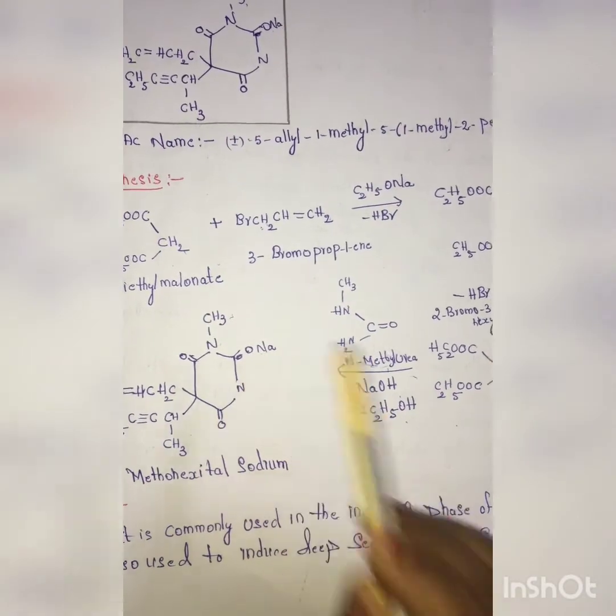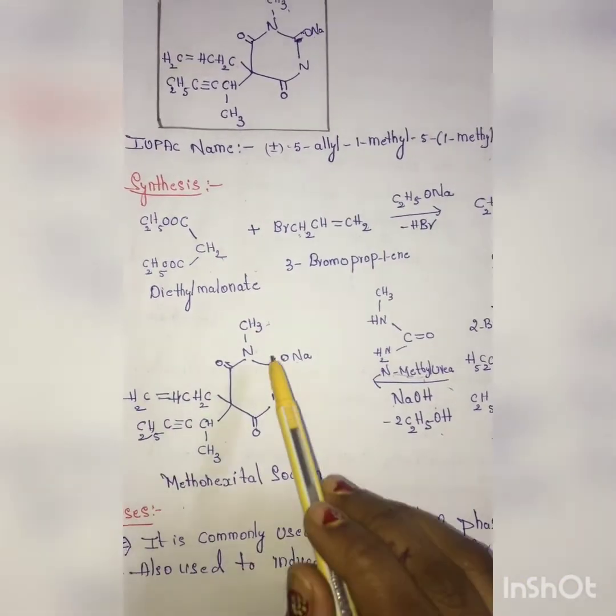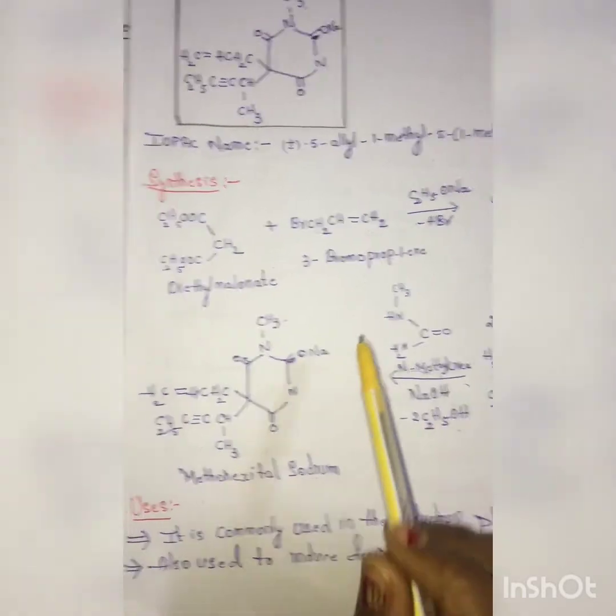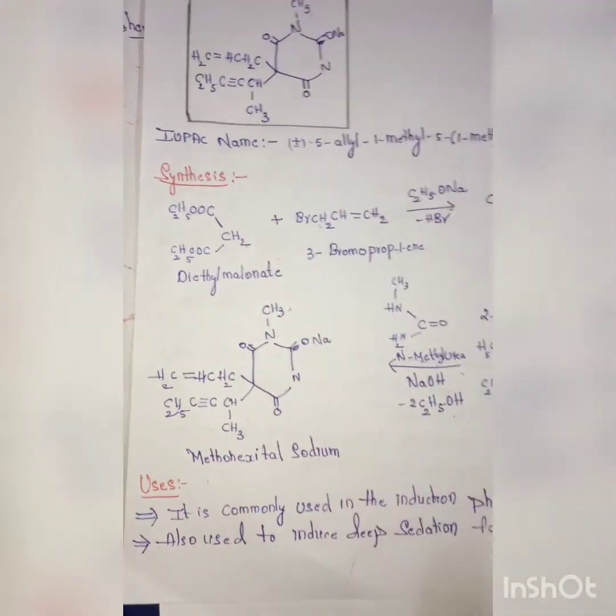So all together with the loss of 2 moles of C2H5OH, and in the next step in the presence of NaOH, you will be getting methohexital sodium. So this is the structure for the methohexital sodium.